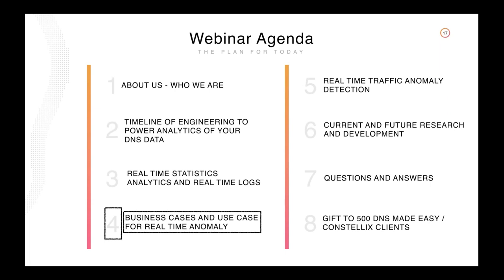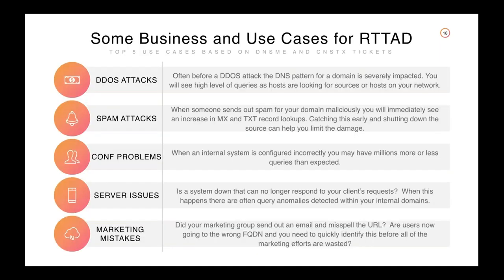The highest use case is DDoS attacks. Often before a DDoS attack, the DNS pattern for a domain is severely impacted — you're going to start seeing random queries generated for your hostname, spiking in little tiny pockets, as people try to figure out what's in your domain space. The real-time traffic anomaly detection, or RTTAD — everything needs an acronym in the computer industry — is what we use to address this.